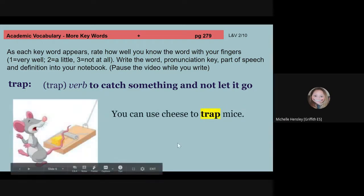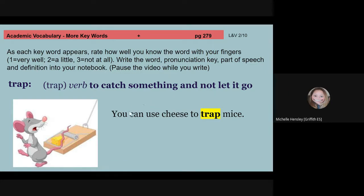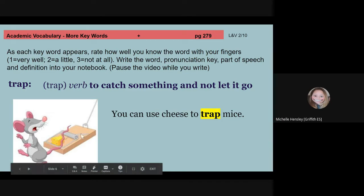Trap means to catch something and not let it go. Okay? So you can use cheese to trap mice. Mice get drawn in by the cheese. You have it on a trap. The trap catches them and it won't let them go. So notice that trap, the action, is a verb and it's trap. But also the thing that you use to catch something and not let it go is the noun form and it's also a trap. To catch something and not let it go. The verb is the act of doing it. The noun is the thing that does it. That's the device.